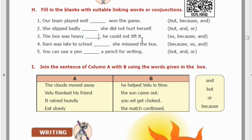Third: 'The box was heavy, ___ he could not lift it.' The answer is 'so.' For the fourth sentence: 'Rani was late to school ___ she missed the bus.' Rani was late to school — why? Because she missed the bus. So 'because' is used to give a reason. 'So' and 'because' both convey a reason.